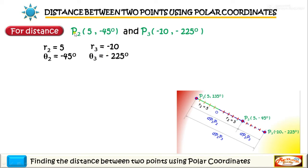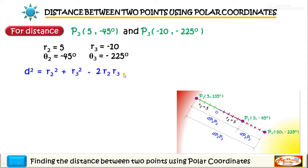Plugging in the given coordinates in this formula again, so we have D squared equal to R2 squared plus R3 squared minus twice the product of R2 and R3 times cosine of theta 2 minus theta 3.